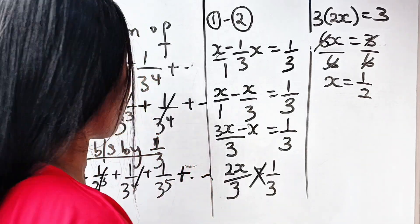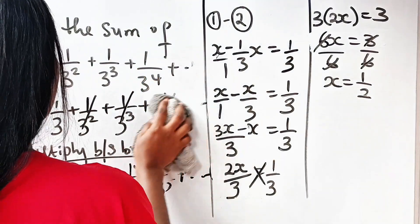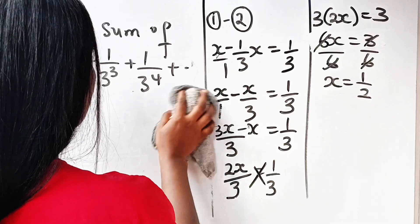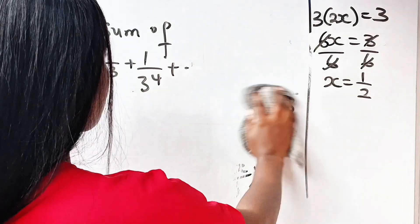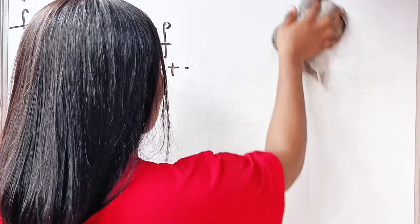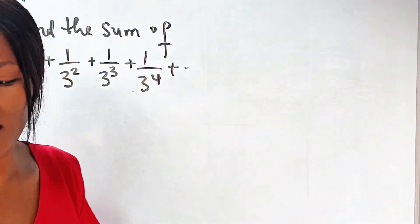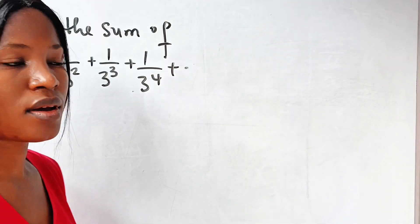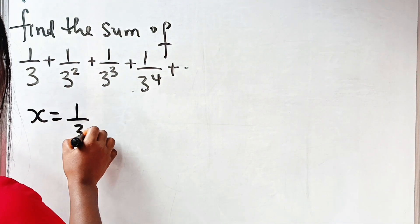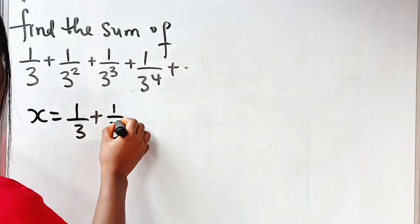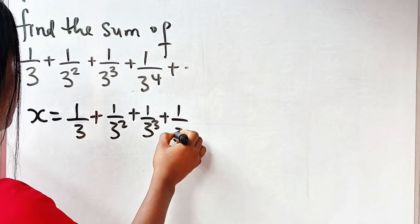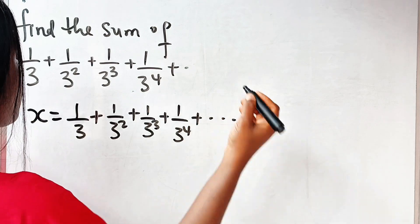Now let's look at the second method. The second method is similar to the first, except that instead of multiplying by 1 over 3, you can actually decide to multiply by 3. So we said let x equal 1 over 3 plus 1 over 3 squared plus 1 over 3 to the power of 3 plus 1 over 3 to the power of 4, and so on.